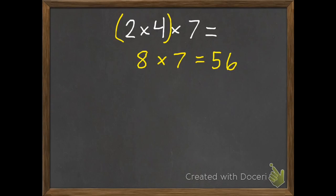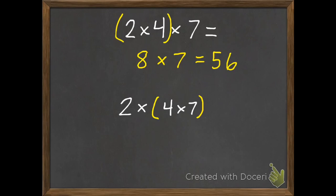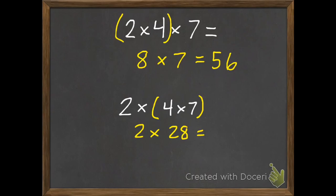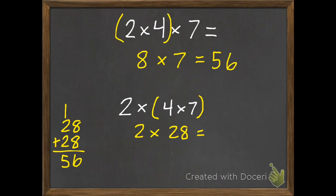If you don't know your 7s or 8s, you need to be practicing them. You might want to group them the second way — you'll still need to know 4 times 7, but that's easier than 8 times 7. So 4 times 7 is 28, and then we just have to multiply that by 2. I doubt anyone has all their 28 times tables memorized, so we might use the strategy of repeated addition: just 28 plus 28. 8 plus 8 is 16, 1 plus 2 plus 2 is 5, and you get 56.